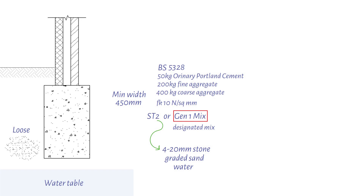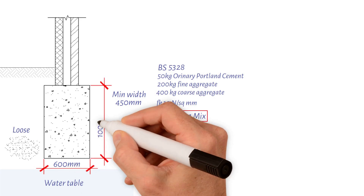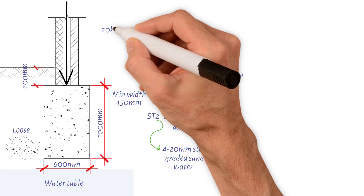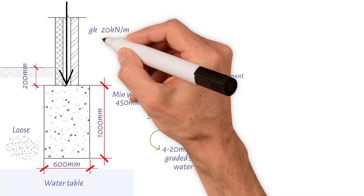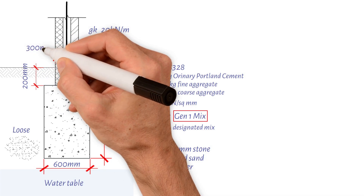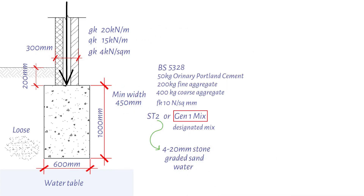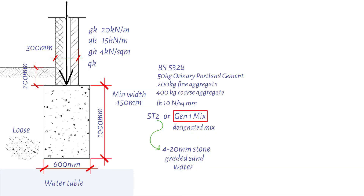As an example, consider designing a trench fill foundation with a width of 600 millimeters and a depth of 1 meter. The soil depth over the foundation is 200 millimeters. We have the axial loading, which is 20 kilonewtons per meter dead load and 15 kilonewtons per meter imposed. Load width is 300 millimeters. We also have a dead surcharge load of 4 kilonewtons per square meter and an imposed surcharge load of 1.5 kilonewtons per square meter.